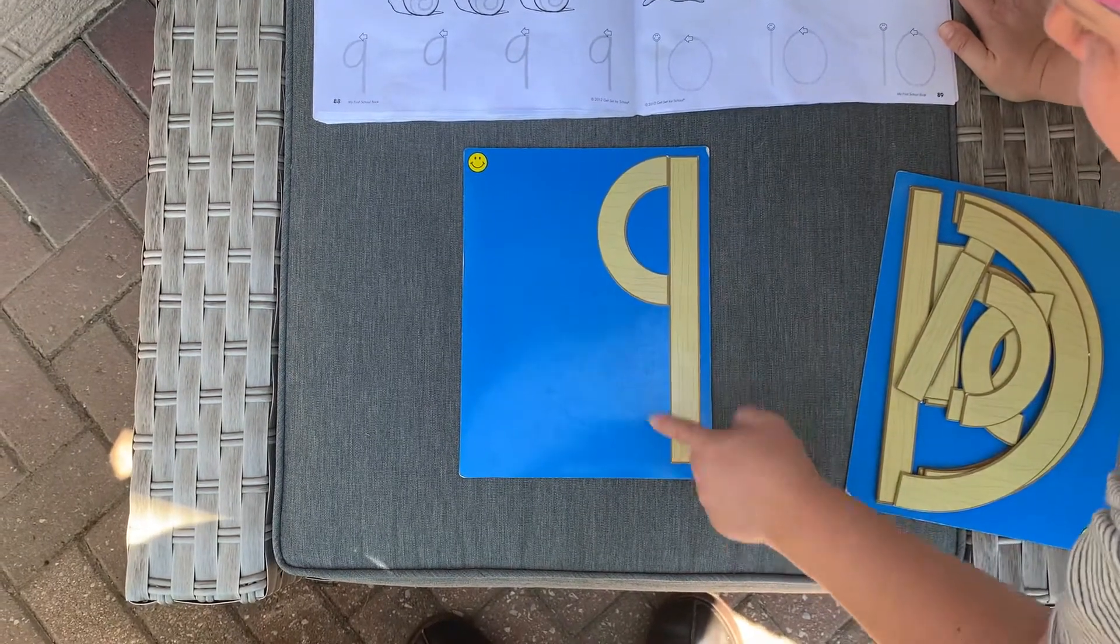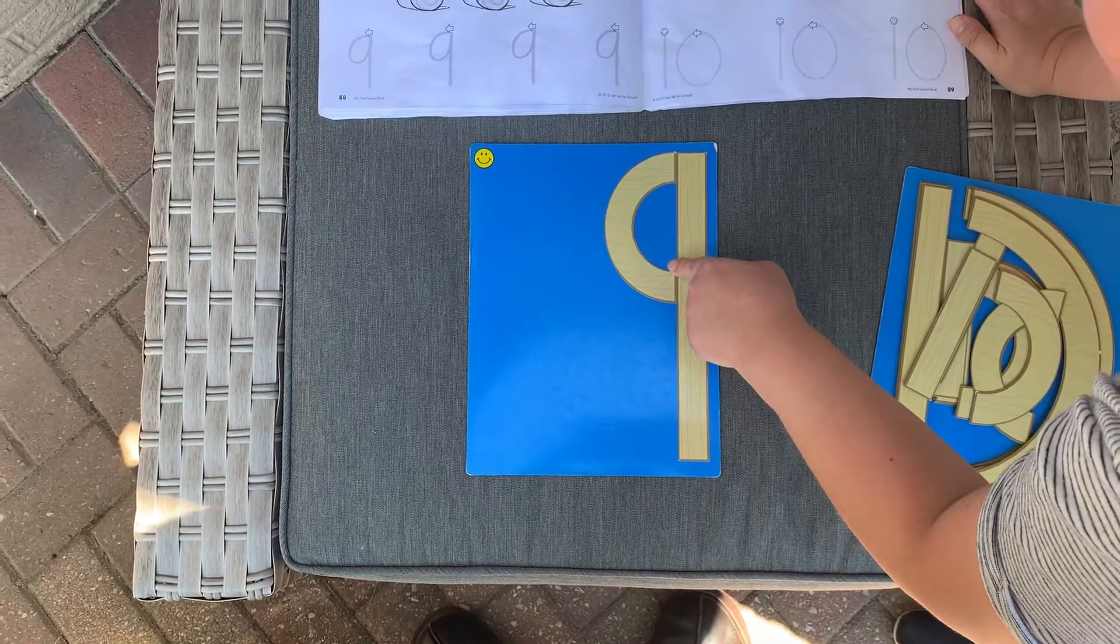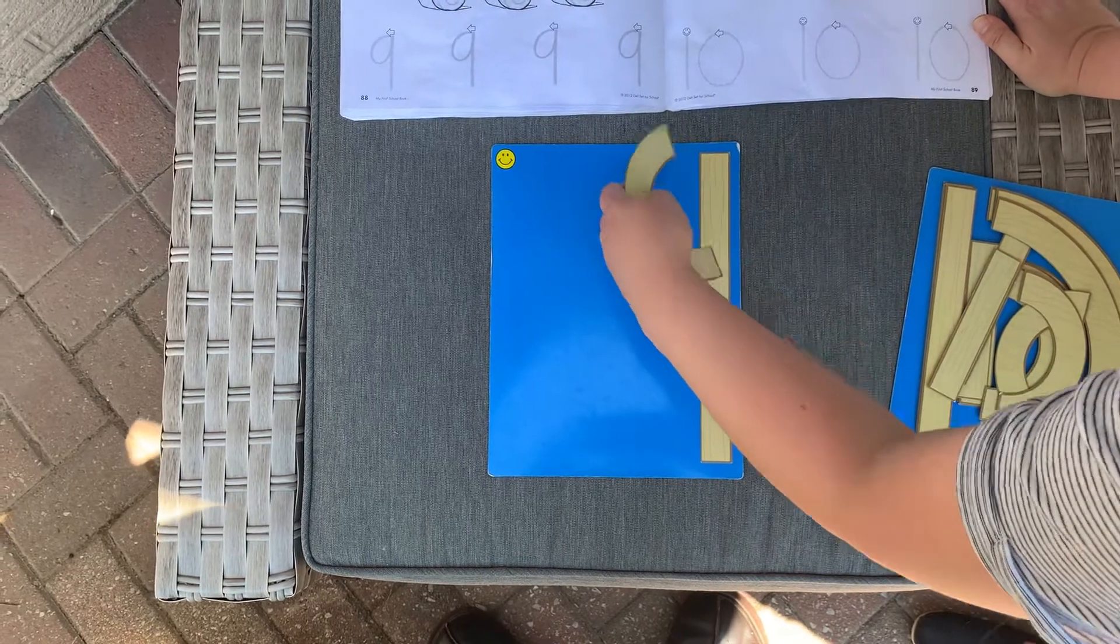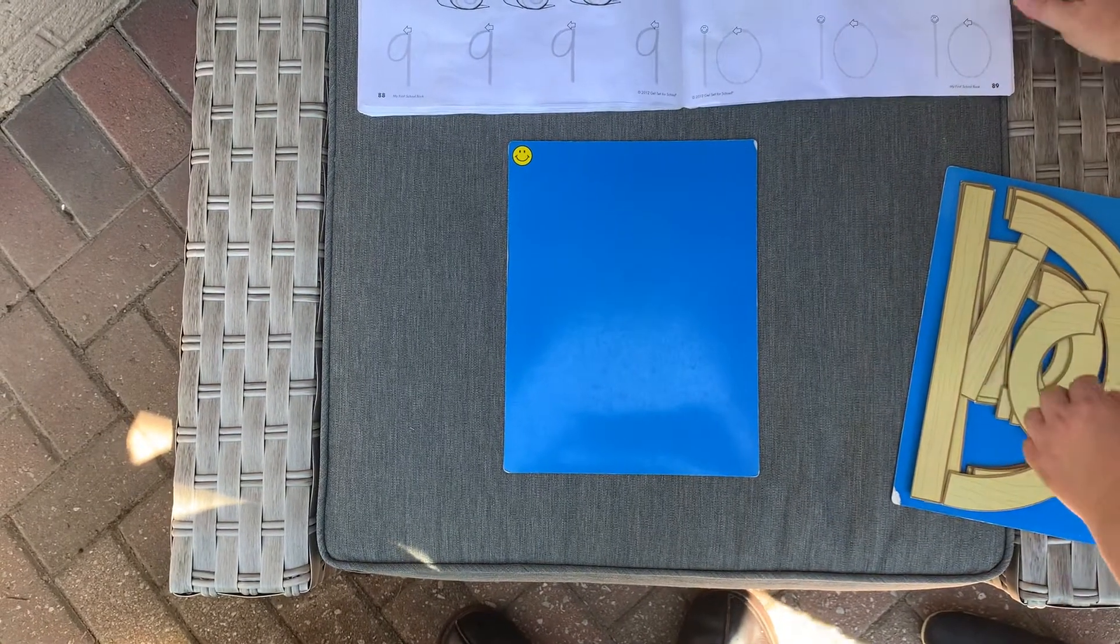Big line down, jump back up, little curve. And now you know how to make the next number.